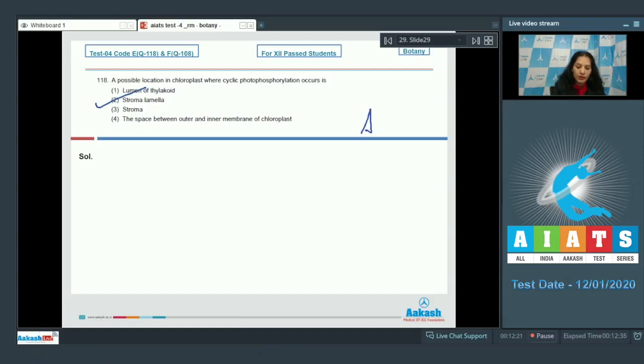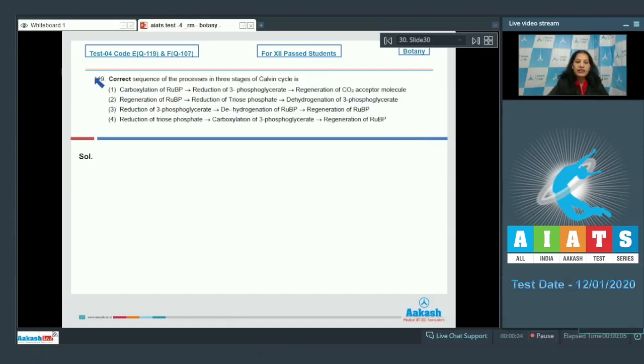Question number 119: The correct sequence of processes in three stages of Calvin cycle is... Calvin cycle is the C3 cycle in which the three major steps are carboxylation of RuBP, this is the first step, and second is the reduction of three-phosphoglycerate, and the last is regeneration of RuBP or the CO2 acceptor molecule. So the correct option is option number 1.